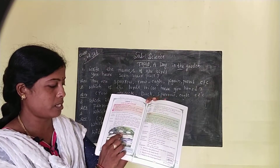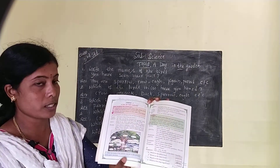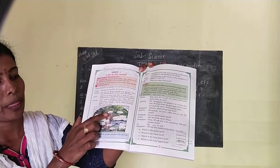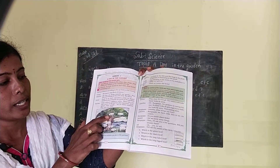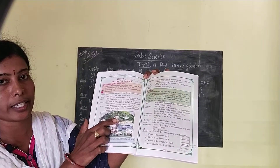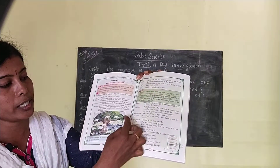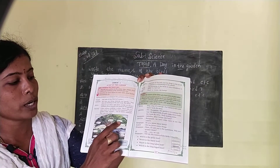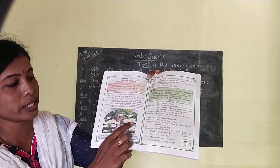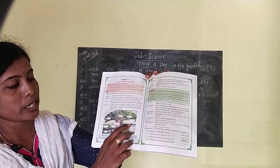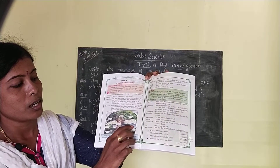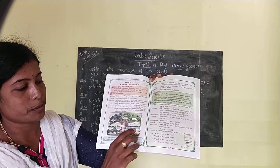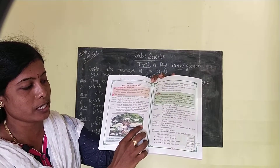The first one is myna — you write M-Y-N-A-H, myna. Next, which bird is there? Owl — you write O-W-L, owl. Next, in the water, which animal do we see? Fish — F-I-S-H, fish.